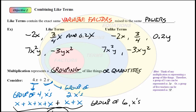When we have algebraic expressions, we want to be able to combine like terms. So first of all, what are like terms? Like terms contain the exact same variable factors, the exact same variable factors raised to the same powers.